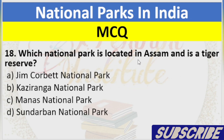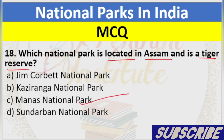Question 18: Which National Park is located in Assam and is a Tiger Reserve? A. Jim Corbett National Park, B. Kaziranga National Park, C. Manas National Park, D. Sundarbans National Park. Answer: C. Manas National Park.